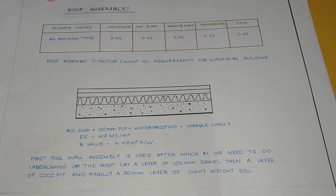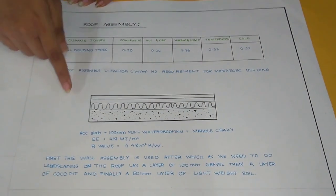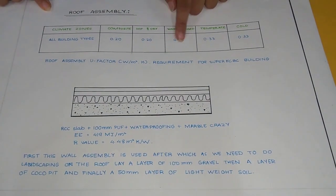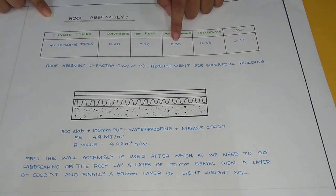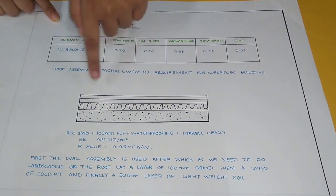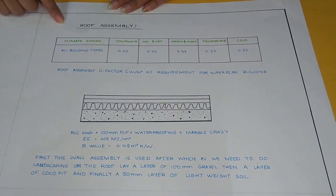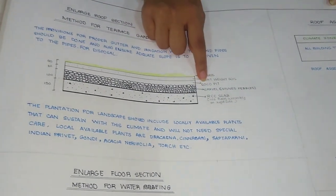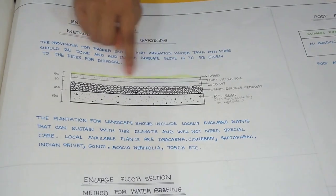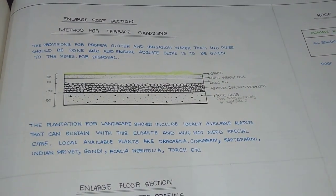These are the roof assemblies and the section for it. As the climate there is warm and humid, so we have this value 0.33. According to that, I have selected this slab and on the slab will have these stones and coco pit and lightweight soil and then we can do the plantation on top of this.